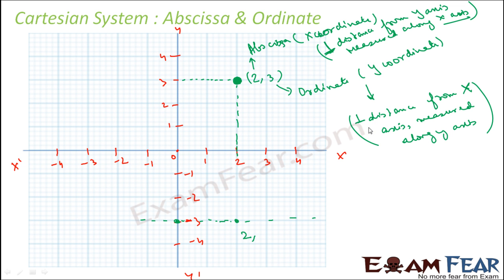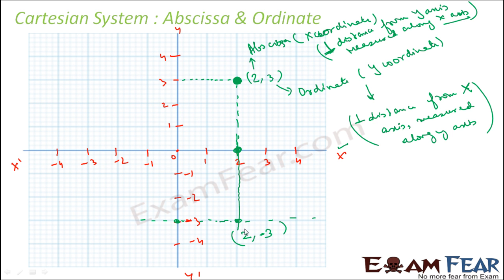The y-coordinate is the distance from the x-axis measured along the y-axis. Draw a line parallel to the y-axis, then find the distance from the x-axis. In the Cartesian system, a point in 2D is always written as x-coordinate comma y-coordinate. In 3D it would be x-coordinate comma y-coordinate comma z-coordinate.